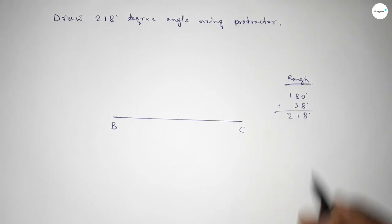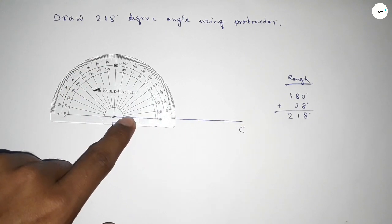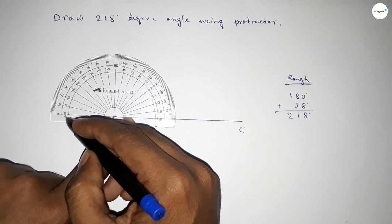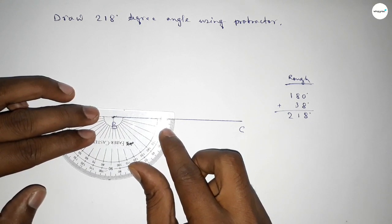First we have to count 180 degree angle, so putting the protractor on the point B and counting 180 degree angle. So this is 180 degree. Plus, putting the protractor on the point B by this way and counting 38 degree angle.